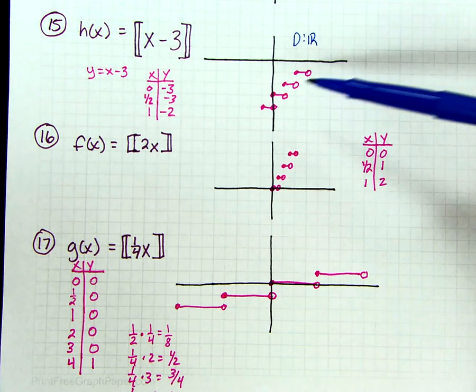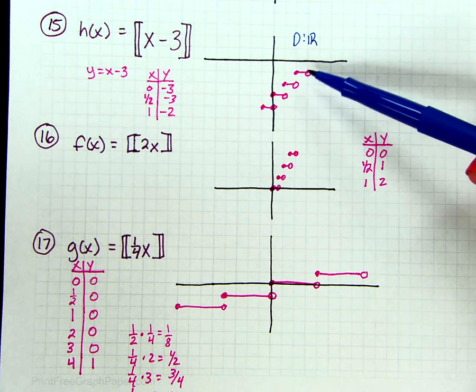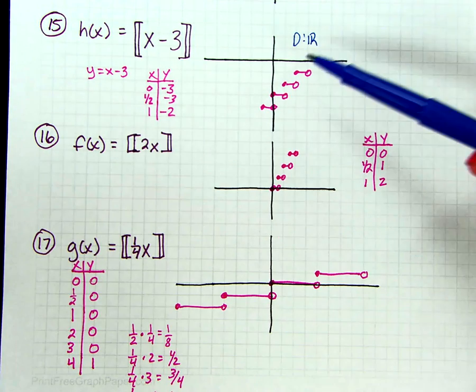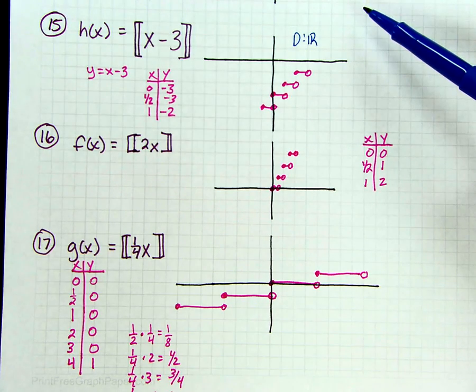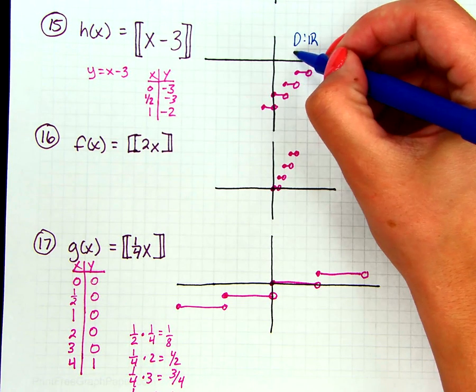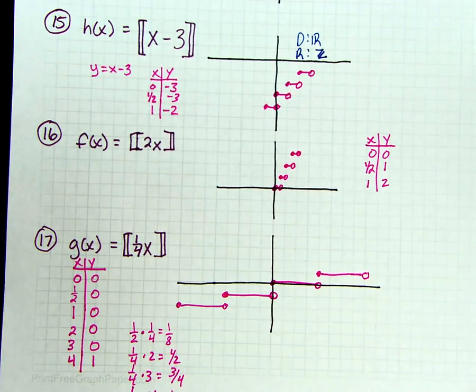So if we're skipping, we're only skipping the parts in between. So again, my y values on this one, I have negative 1, negative 2, negative 3, negative 4, all the way down to negative infinity. Same thing, we're going to go all the way up to positive infinity, but it's only ever going to be on a whole number. So that, again, my range is going to have to be all of the integers for this one.